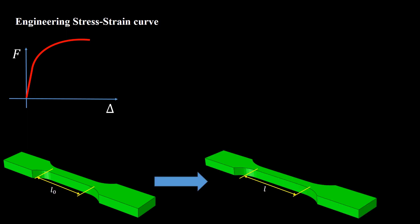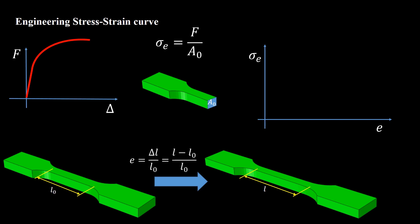Imagine that this is the specimen before test, and the gauge length of the specimen is L0. During the test, the length is increased to the value of L. The engineering strain is defined as delta L divided by L0. Assume that A0 is the initial cross-sectional area of the specimen. The engineering stress is defined by dividing the current force by the initial cross-sectional area. Now we can redraw the curve as the engineering stress strain curve.